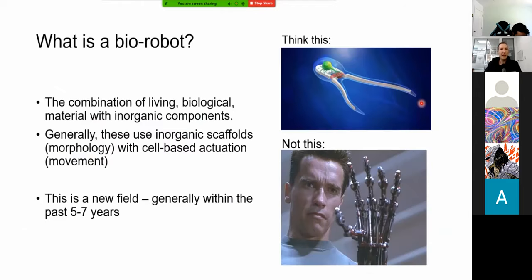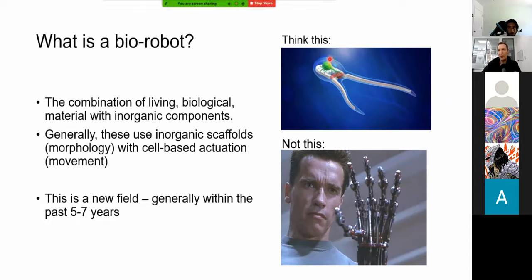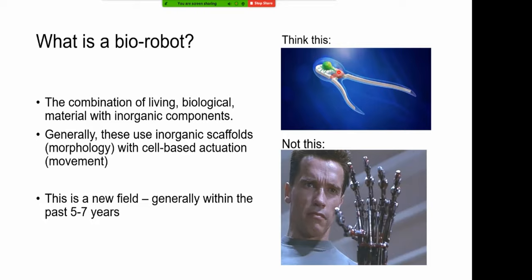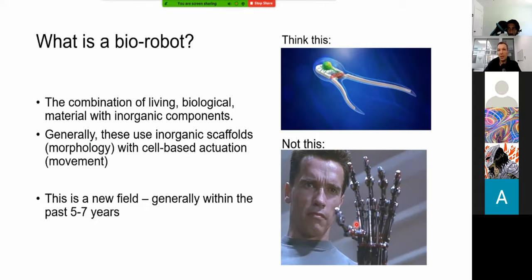So what's a bio robot? Think of a bio robot as the combination of living biological materials with inorganic components. Generally, you have an inorganic scaffold that creates the morphology or shape, and you're using cells to actuate the robot or generate movement. The biology in a bio robot is integral for it to function — unlike something like the Terminator, where the skin is for camouflage but the robot functions fine without the biological components. This is a new field, generally within five to seven years old.